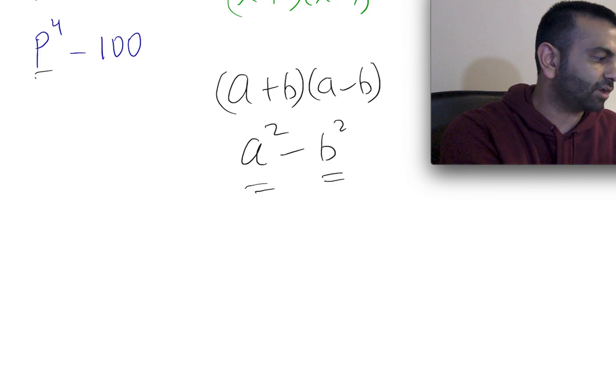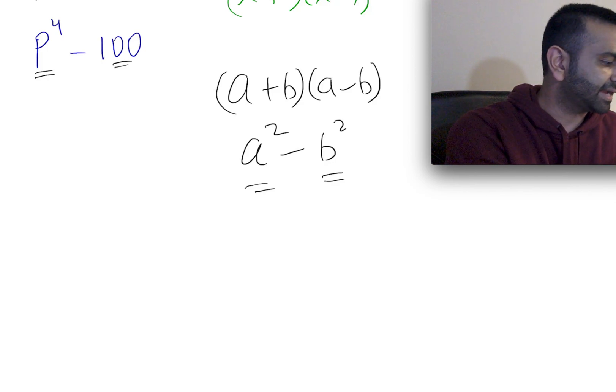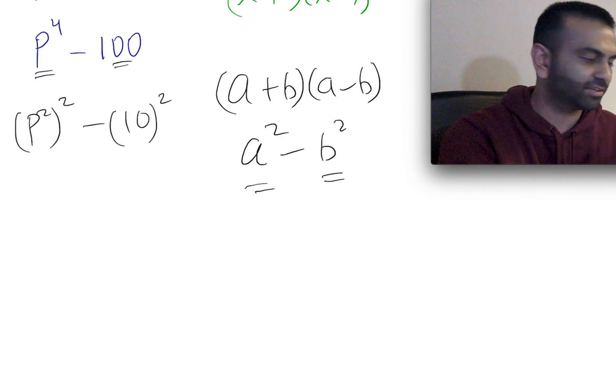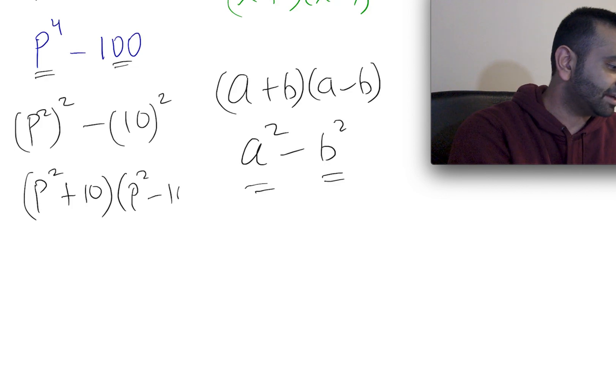Looking at this, both of these things are perfect squares. p to the fourth power, that's the same thing as p squared taken to the second power. This is that, and 100 is 10 squared. So now that we have something squared minus something squared, this rule tells us that's just the first guy, which is p squared, plus the second guy, so plus 10, and then p squared minus the second guy, minus 10.